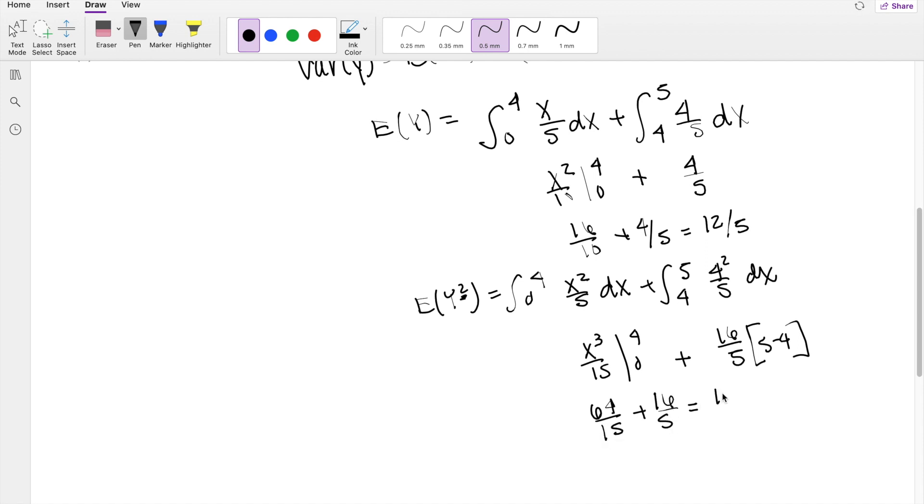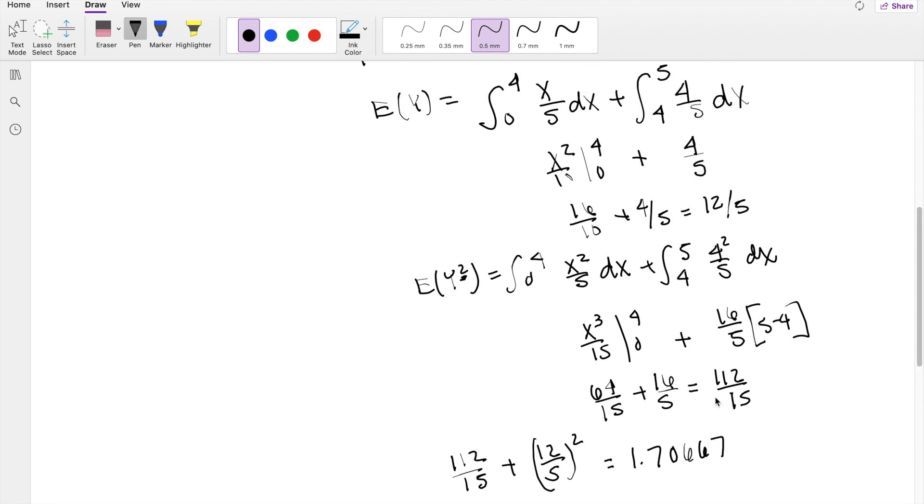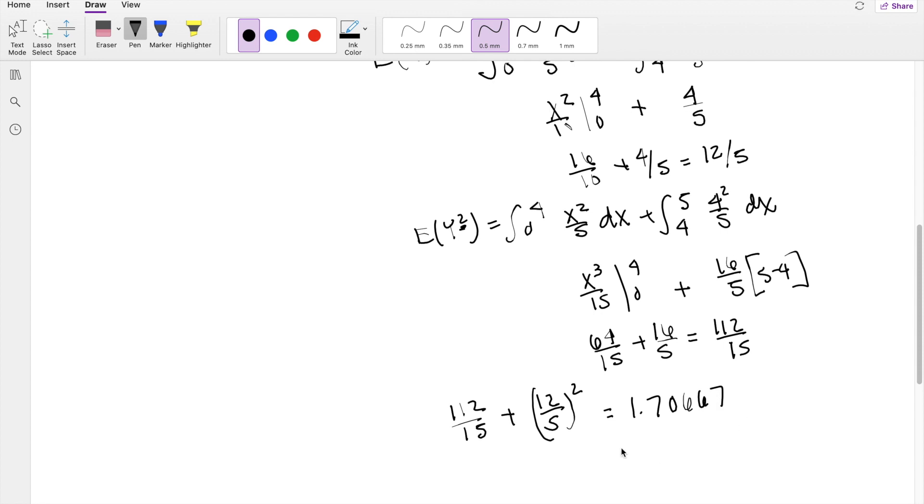So then plugging it into our variance formula, you get 112 over 15, minus 12 over 5 squared. This is equal to 1.70667, which is approximately equal to 1.7, our answer, C.